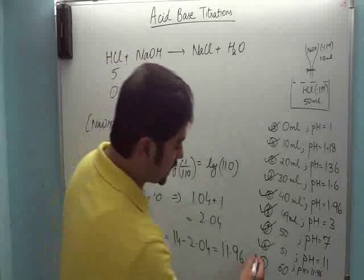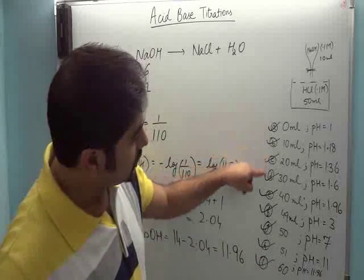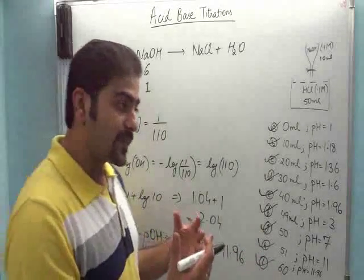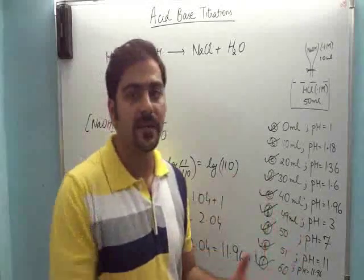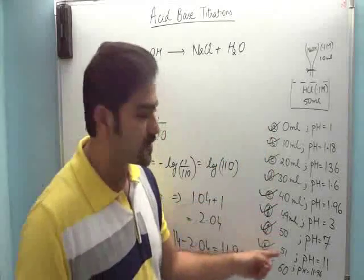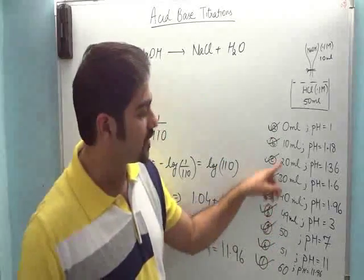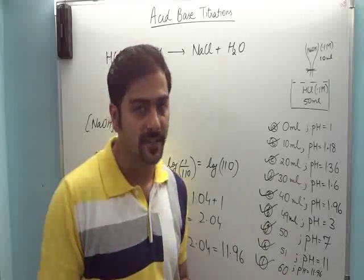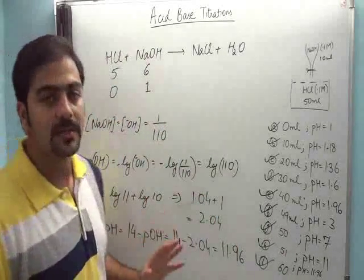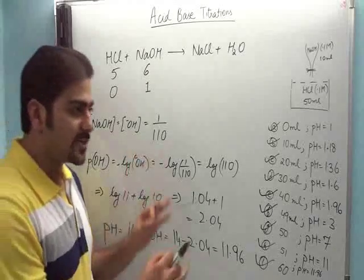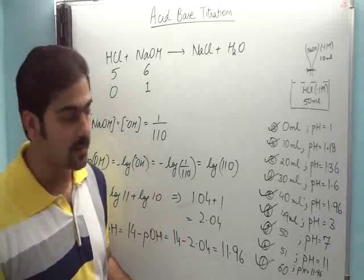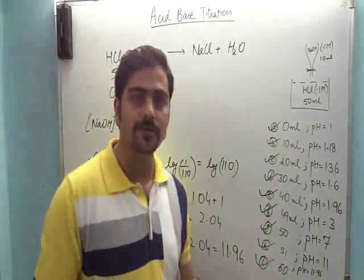Toh humne ek ek karke nine questions kar liye hain. Ab agar JEE Main ya JEE Advanced mein kabhi bhi question aata hai, toh ho sakta hai bas values different hon — humne 30, 40, 20 kiye, ho sakta hai value 25 aye, 35 aye. But yeh jo method humne sikha — log nikalne ka, pH nikalne ka — method bilkul same rahega. Ab hum in sari values ko use karke ek titration curve banate hain.